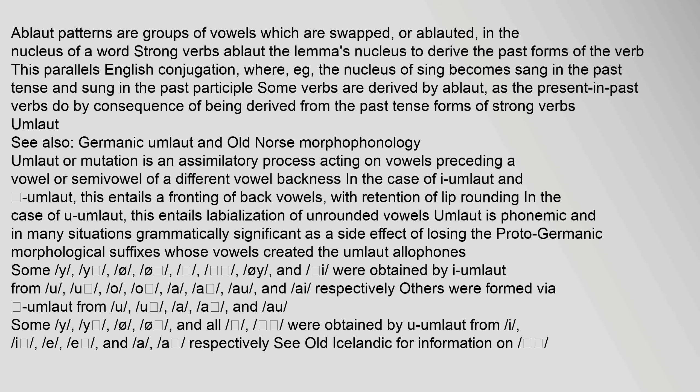Umlaut, or mutation, is an assimilatory process acting on vowels preceding a vowel or semivowel of a different vowel backness. In the case of i-umlaut, this entails a fronting of back vowels with retention of lip rounding. In the case of u-umlaut, this entails labialization of unrounded vowels. Umlaut is phonemic and in many situations grammatically significant, as a side effect of losing the Proto-Germanic morphological suffixes whose vowels created the umlaut allophones.